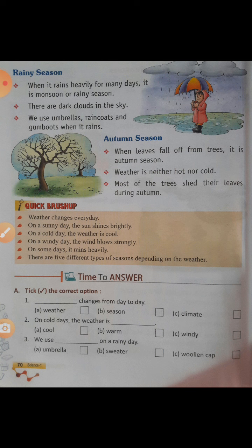On a sunny day the sun shines brightly. On a cold day the weather is cool. On a windy day the wind blows strongly. On some days it rains heavily. There are five different types of seasons depending on the weather.